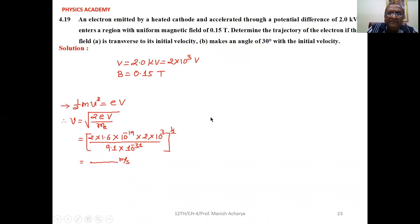If you want to find the trajectory, means radius for the motion of the charged particle, then you must have its velocity. But velocity is not given to you.